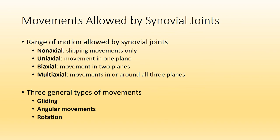A few more terms refer to the range of motion allowed at synovial joints, based on how many planes that joint is able to move through. Non-axial means simply slipping movements only — flat bones sliding against each other, as seen in the wrist and ankle. Uniaxial means movement in one plane or around one axis. Biaxial means movement in two planes. Multiaxial means movement in or around all three planes — the coronal or frontal plane, the sagittal plane, and the transverse or horizontal plane.